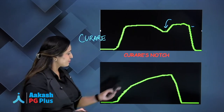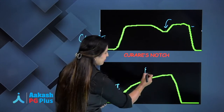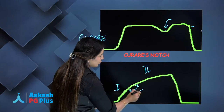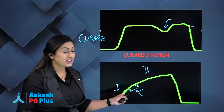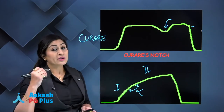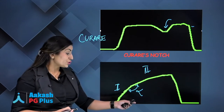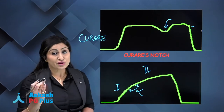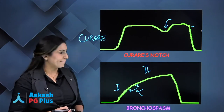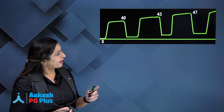In this capnogram, the alpha angle between phase 2 and phase 3 has become obtuse. This is seen in bronchospasm, high airway pressures, or a kinked tube. You should search for all causes of such a capnogram pattern.